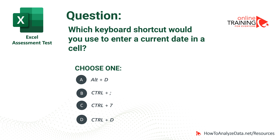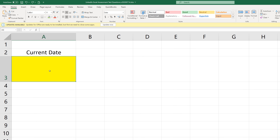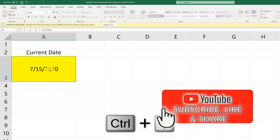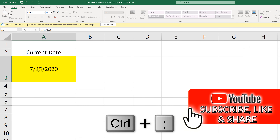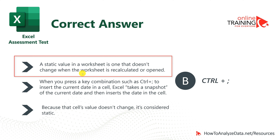To insert the current date into an Excel sheet, put your cursor on a cell and then press Ctrl and semicolon. This combination inserts the current date into the cell. Keep in mind that the value inserted remains static — if you open the same worksheet tomorrow, the date will be yesterday's date, because Excel shows the date at the time it was inserted. The correct answer is choice B, Ctrl plus semicolon.